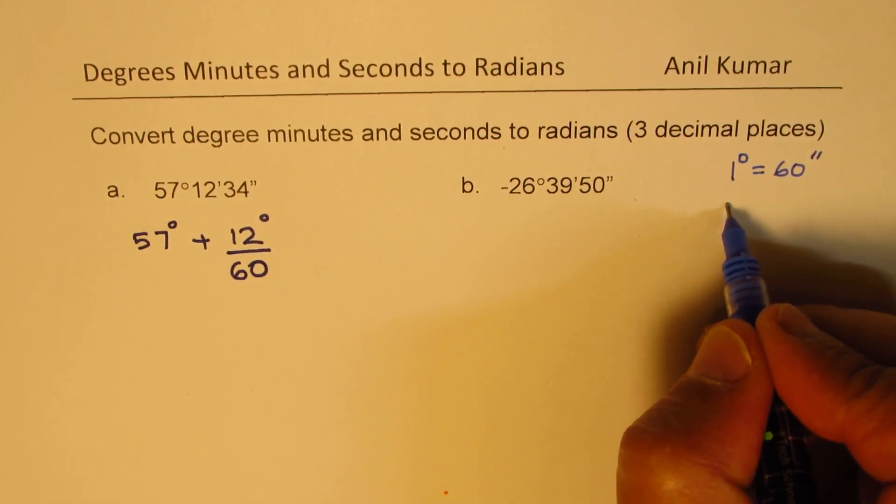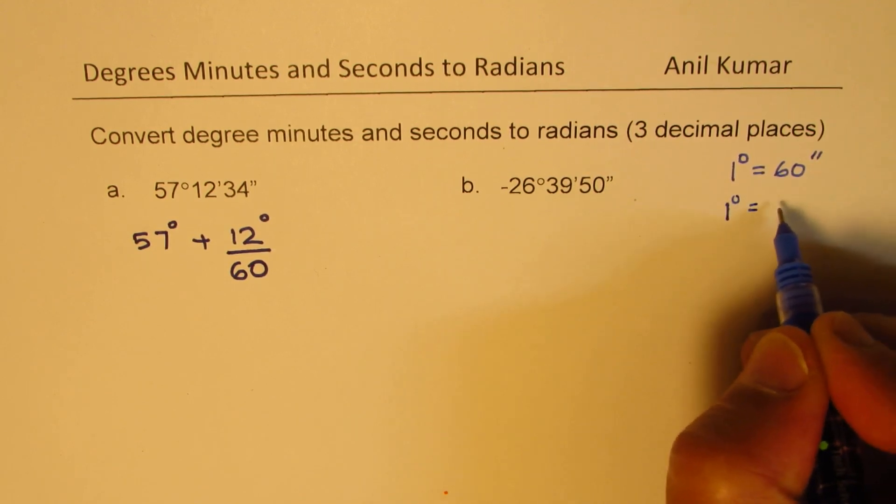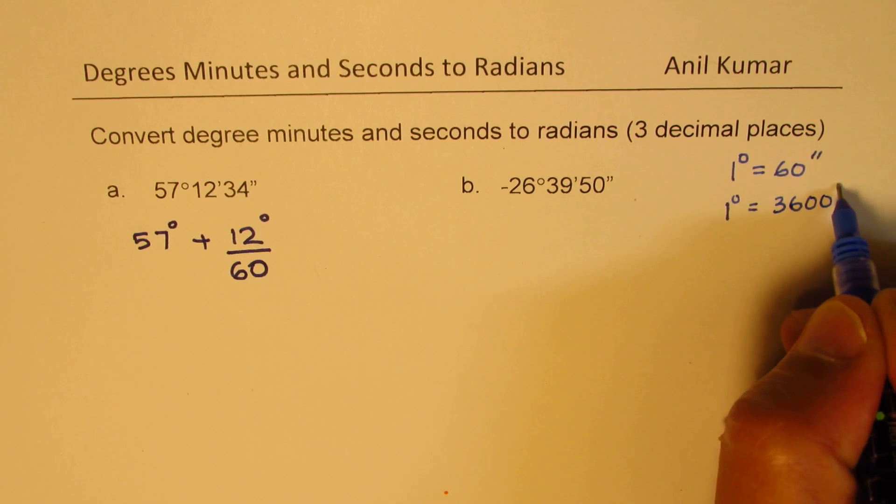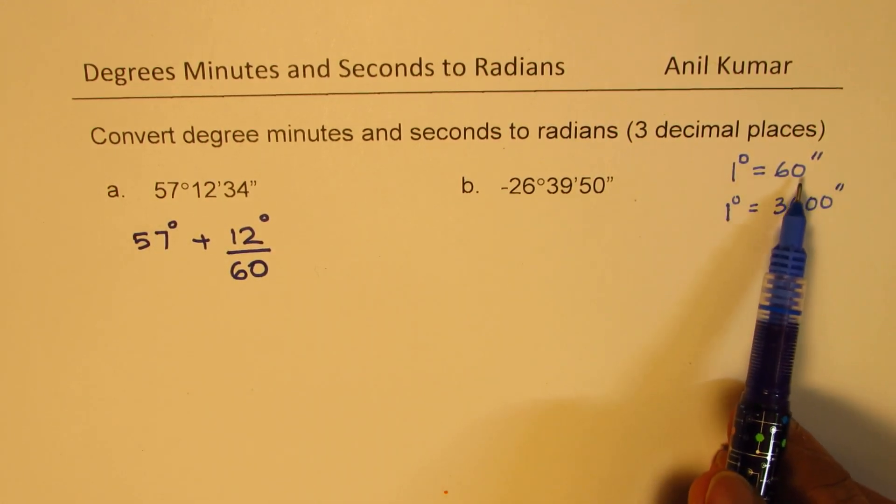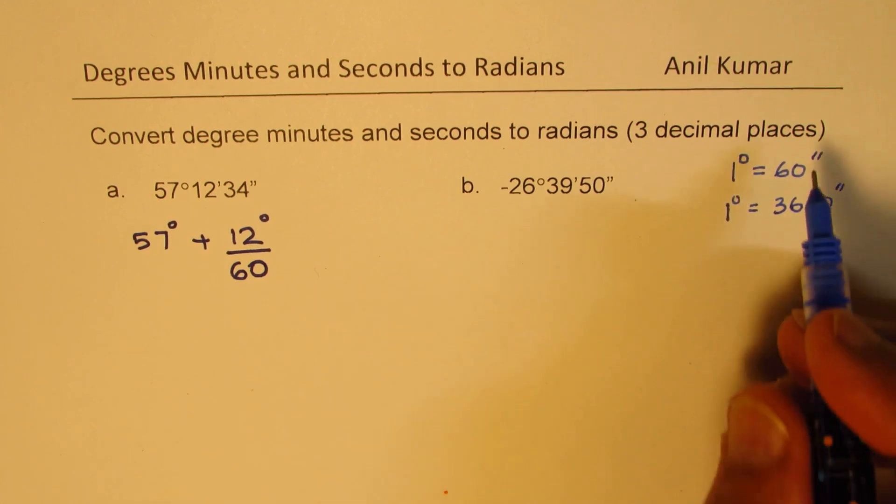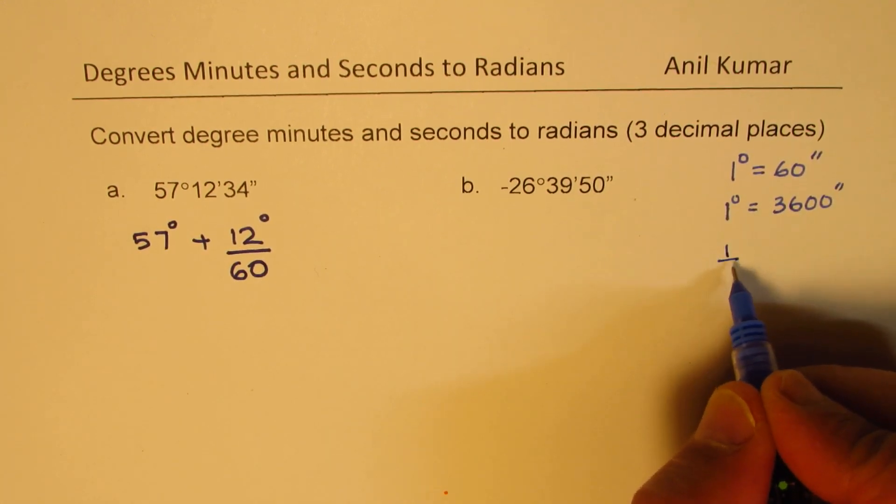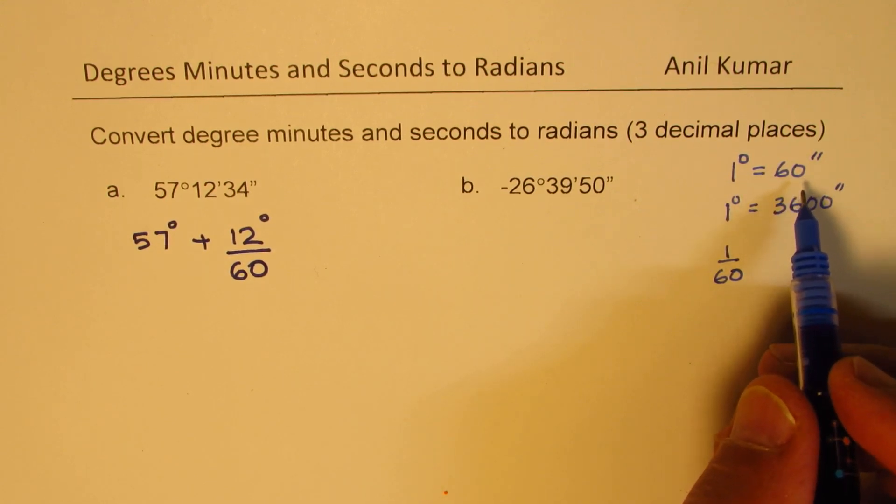And one degree is equal to 60 times 60, which is 3600 seconds. So when you're doing the reverse, that is when you convert minutes to degrees, then in that case, one over 60 will be the value.